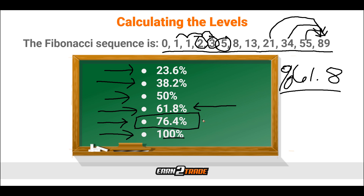Some other very notable levels would be the 50% as well as the 38.2, roughly in that order. The 38.2 and the 50 arguably go back and forth with which traders value more, but these are the top three hands down in my opinion of the Fibonacci retracement levels. These are the ones we're mostly going to be hunting for — just remember the 38.2, the 50%, and the 61.8. And because we live in a world of computers and technology, we don't have to do the math ourselves to generate these levels.